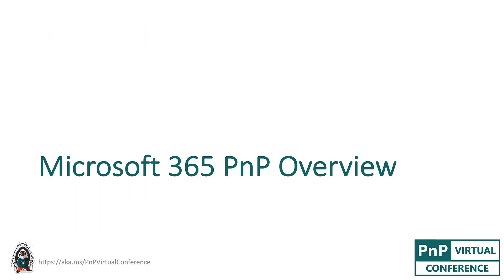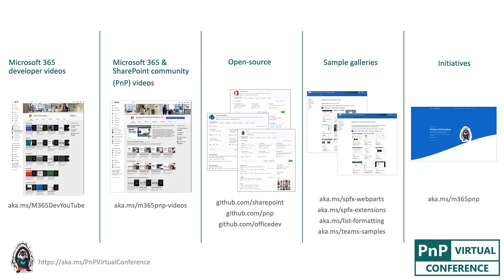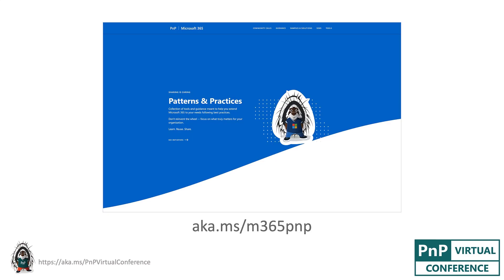And now let's overview the Microsoft 365 PNP initiative. Microsoft 365 PNP is an open-source initiative coordinated by Microsoft 365 Engineering. It's a set of resources on top of Microsoft 365 to simplify admins', developers', and users' lives. It contains tons of helpful materials: Microsoft 365 Dev videos, Microsoft 365 PNP videos, open-source tools and libraries like Office 365 CLI, PNP PowerShell, Yeoman Generator, and others, plus sample galleries for SPFx, Column and View formatting, Microsoft Teams, etc. And the only URL you should remember is aka.ms/m365pnp.